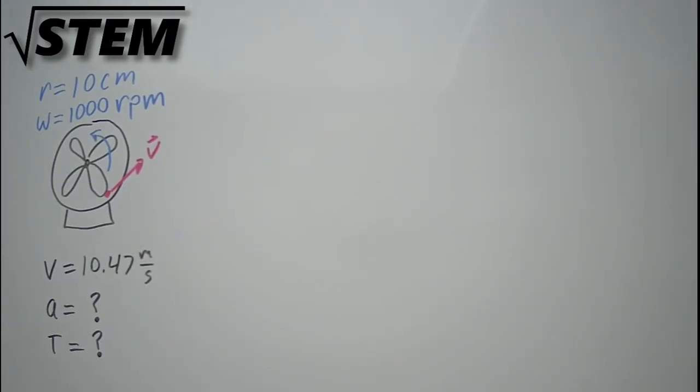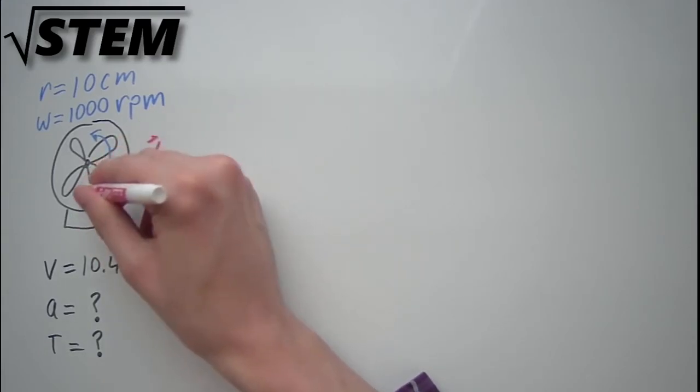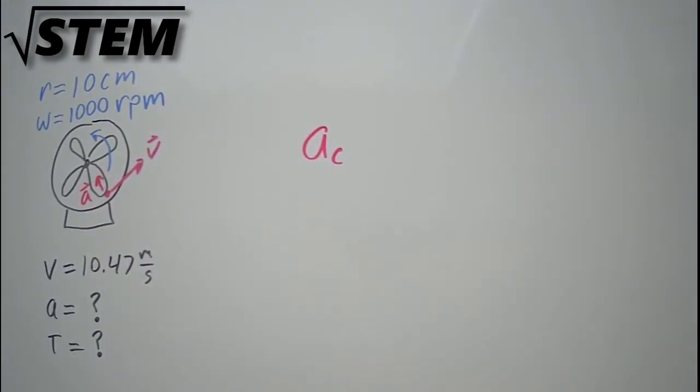Now to find the acceleration. Because this is staying at a constant angular velocity, we know that it's not accelerating at all in the angular direction. That means the only acceleration the fan blades feel is the inward acceleration to keep them in circular motion. This is also called the centripetal acceleration, ace of c.